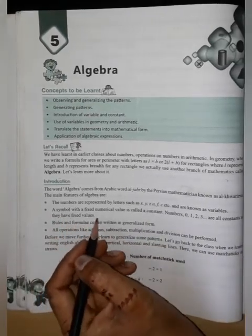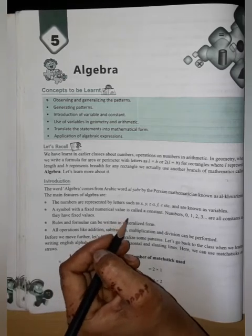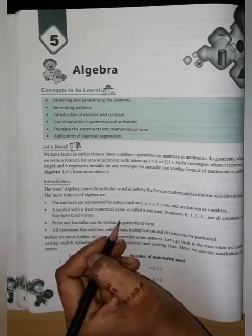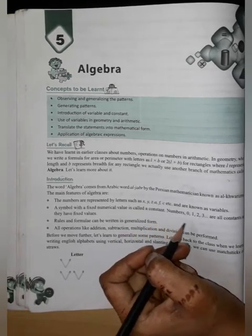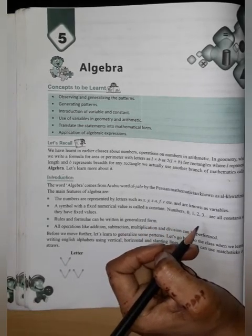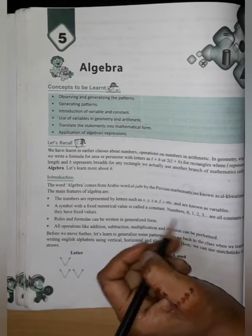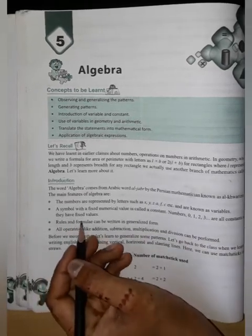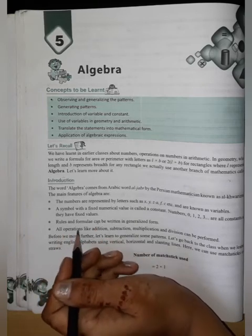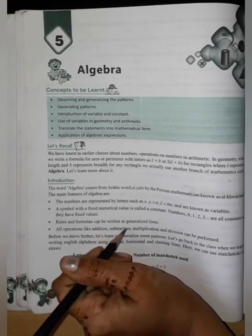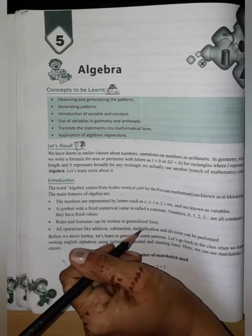Symbols with a fixed numerical value, the fixed values are called constants. Numbers 0, 1, 2, 3 are all constants as they have fixed values. Rules and formulas can be written in a generalized form.